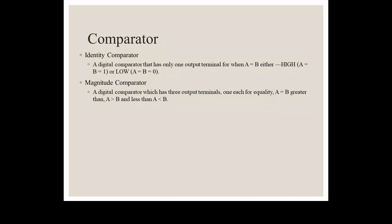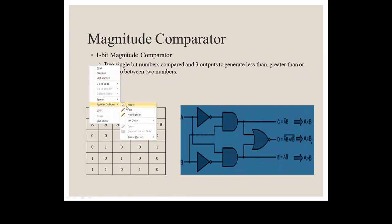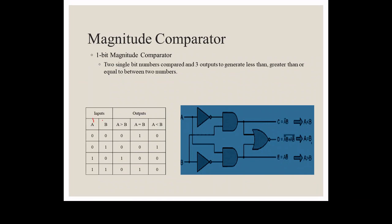In the Magnitude Comparator, this is a digital comparator which has three output terminals: one for equality, second for A greater than B, and third for A less than B. We will design a Magnitude Comparator. For the one-bit Comparator, A and B are the two inputs and there will be three outputs: A greater than B, A equal to B, and A less than B.